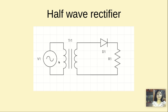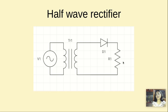So what happens in the negative cycle? When this terminal becomes negative and this one becomes positive, this positive and this negative makes the diode D1 to be in reverse bias. When the diode is in reverse bias, the diode does not allow the current to pass through it. So we won't get any output signal in R1.